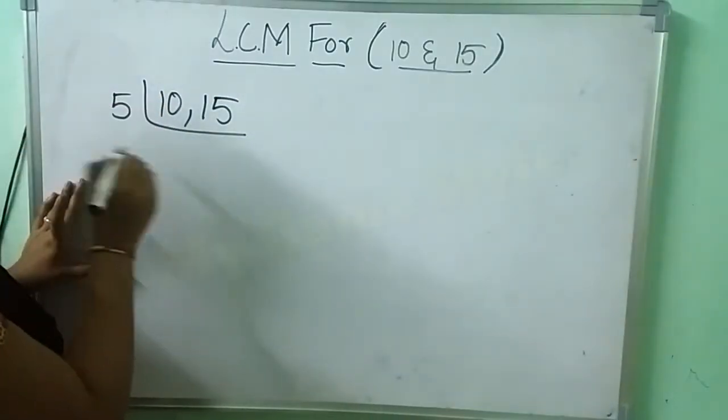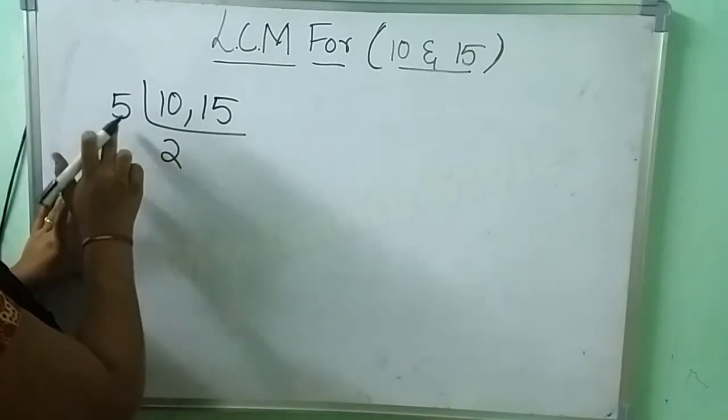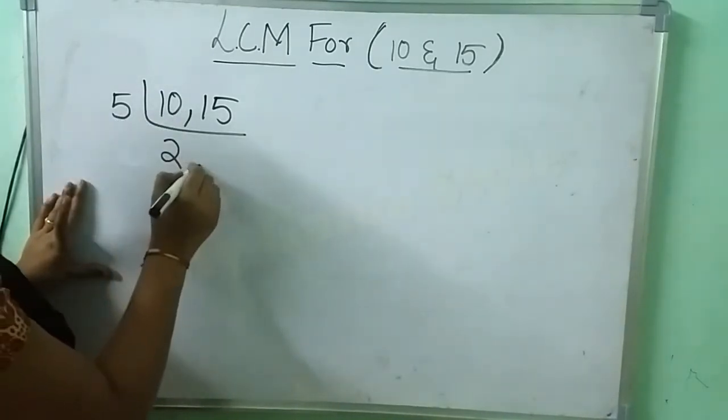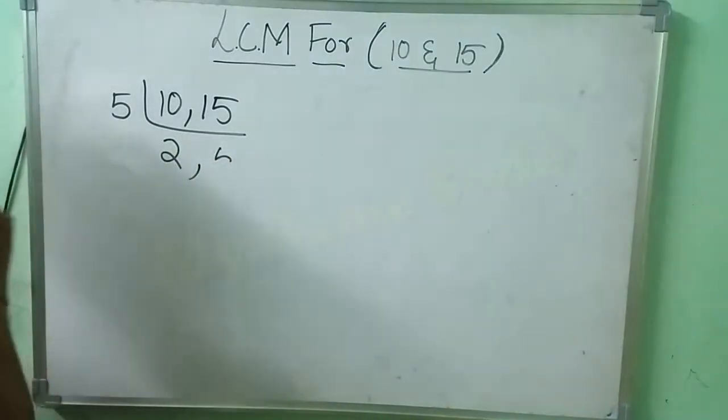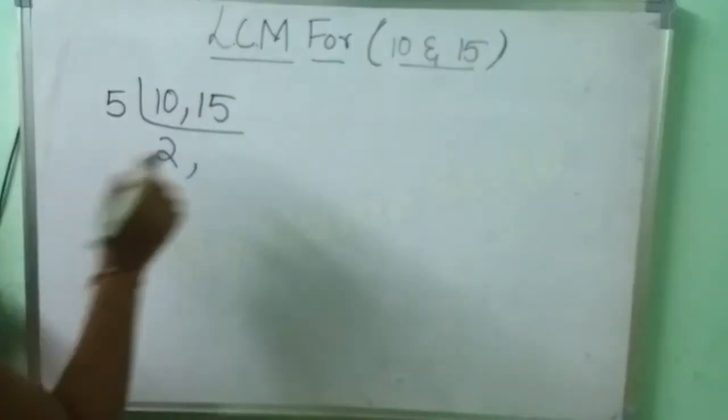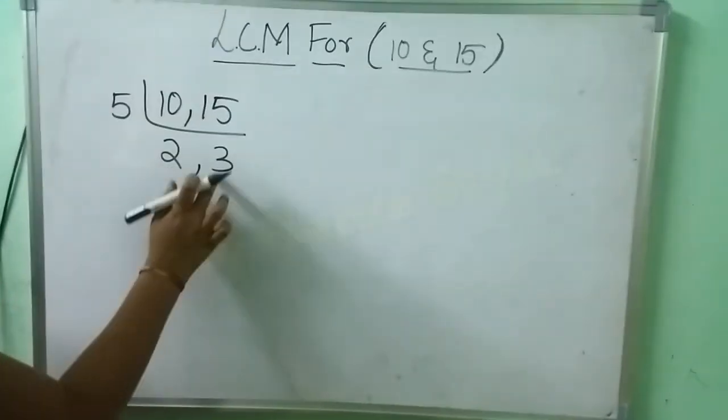I am taking 5 table here. 5 into 10, comma 5 3's are 15. 5 3's are 15.